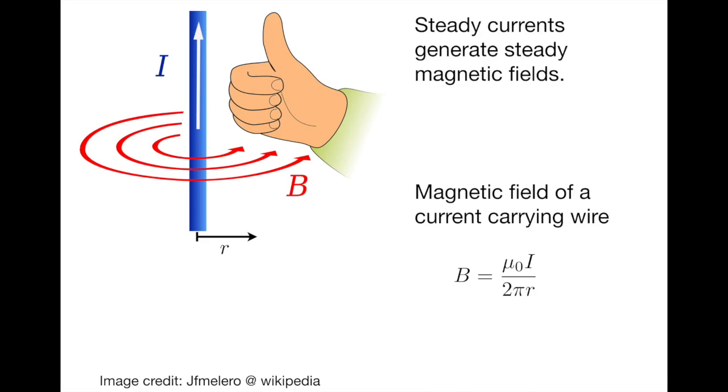The idea here is that steady currents will generate steady magnetic fields following the Biot-Savart law. The magnetic field of a steady current carrying wire is given as B equals mu naught I over 2 pi r, where mu naught is the permeability of free space, I is the current in the wire, and r is the distance from the wire to wherever the magnetic field is being measured.